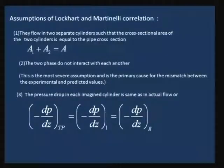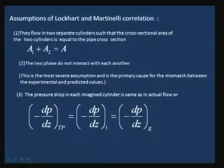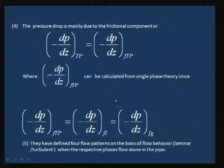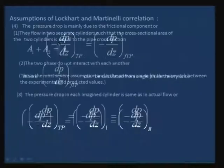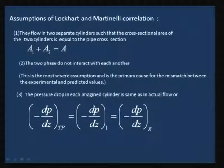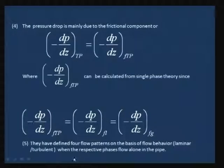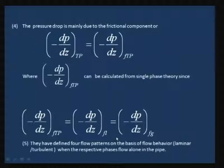The second and most severe assumption is that the two phases do not interact with each other. As a result, the pressure drop in each imagined cylinder equals the pressure drop in the actual two-phase flow. So the two-phase pressure gradient equals the frictional pressure gradient in the liquid cylinder, which equals the frictional pressure gradient in the gas cylinder.